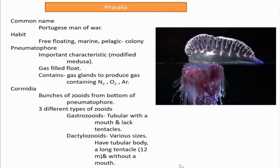Good morning students. Today in this class we are going to see another example of the class Hydrozoa, that is Physalia. Its common name is Portuguese Man of War, because this portion has some resemblance to a warship. Regarding its habit, it is free-floating — not attached to anything — and it is also marine, meaning it is found in the sea.